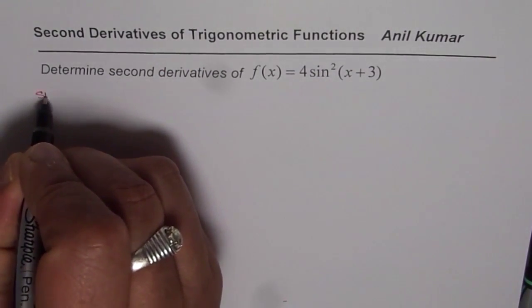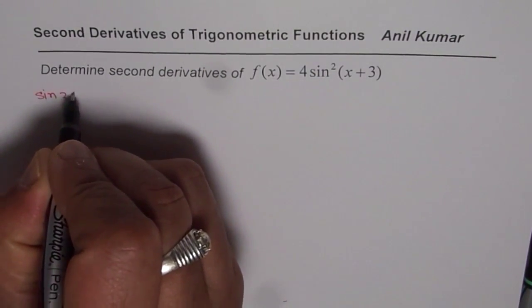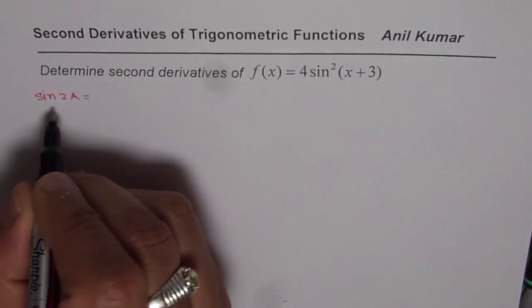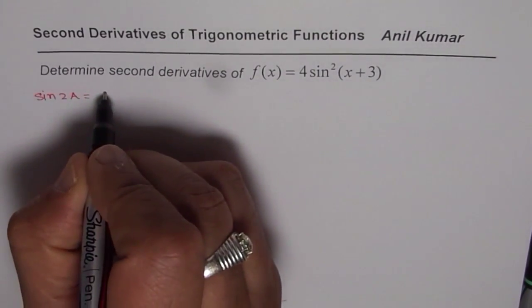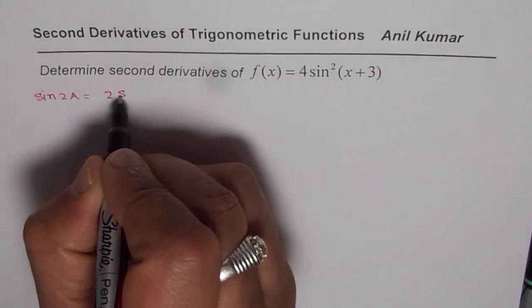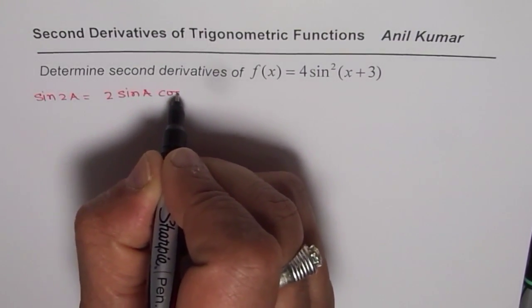One of them is sine 2a. What is sine 2a equal to? Sine 2a equals 2 sine a cos a.